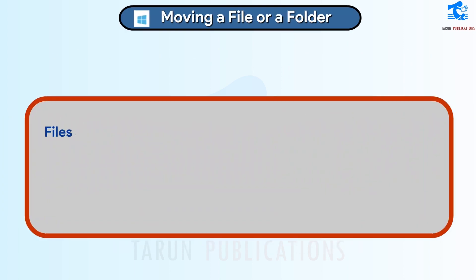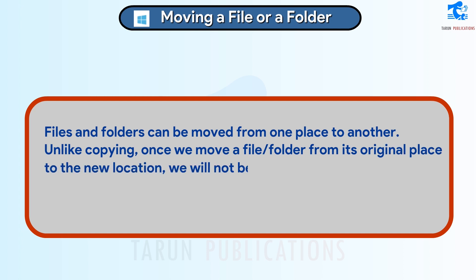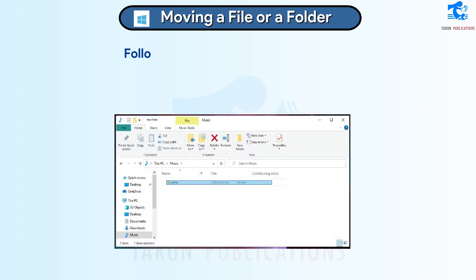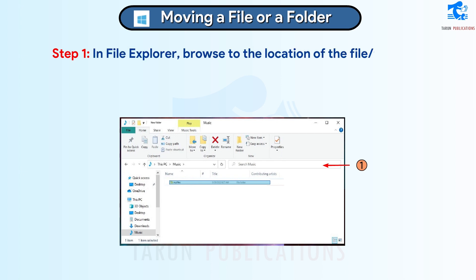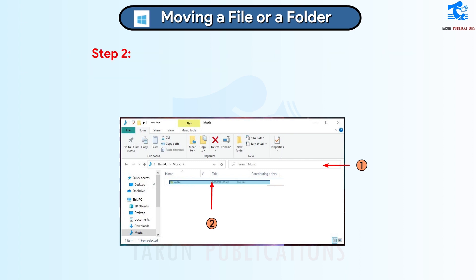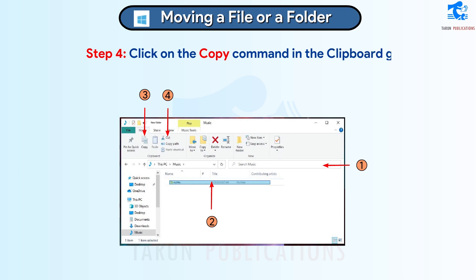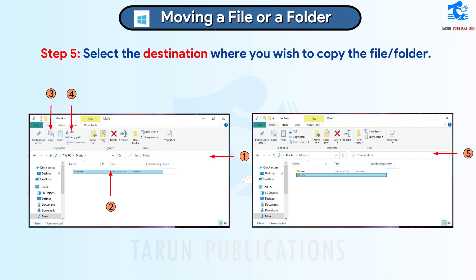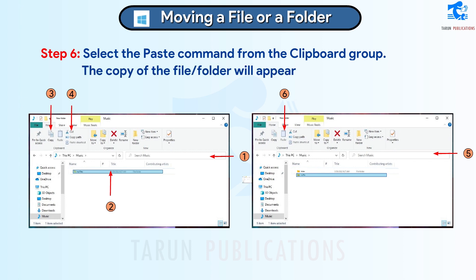Moving a File or Folder. Files and folders can be moved from one place to another. Unlike copying, once we move a file or folder from its original place to the new location, we will not be able to find the file or folder at the previous location. Follow these steps: Step 1: In File Explorer, browse to the location of the file or folder which you wish to move. Step 2: Select the file or folder that you wish to move. Step 3: Click on the Home tab. Step 4: Select the Cut command from the Clipboard group. Step 5: Select the destination location or folder where you wish to move the file or folder. Step 6: Select the Paste command from the Clipboard group. The file or folder will be moved to the new location.